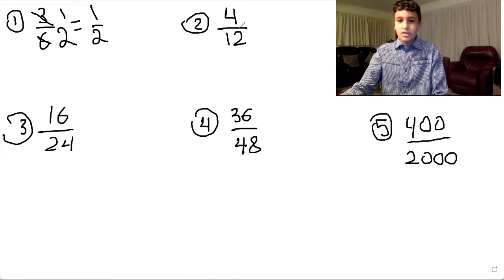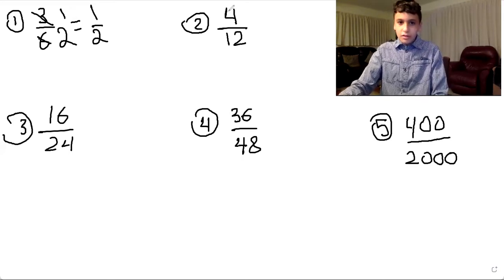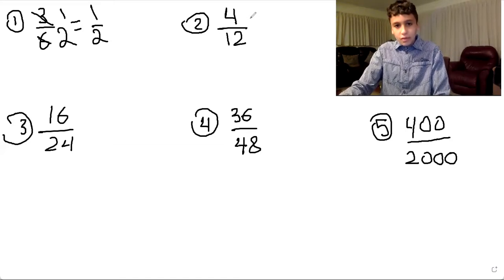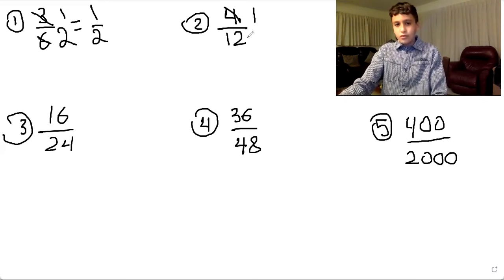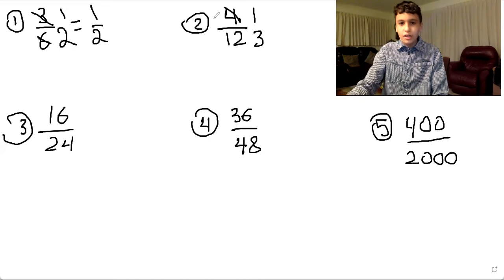For the second question, you look for the number that will go into the numerator and denominator again. So four can go into itself one time. And for 12, four can go into 12 three times. So we can't reduce it anymore, and our final answer will be one third.